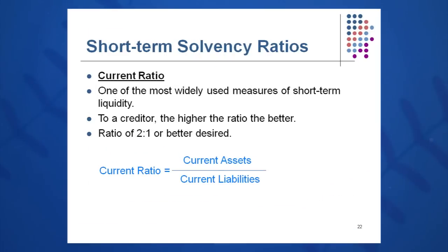Current ratio is very, very important — this is one you must memorize for life. It's current assets divided by current liabilities. Both indicators come off the balance sheet. A ratio of 2 to 1 is desired. Some authors say 1 to 1, but I like 2 to 1 better because it gives us a little bit of a buffer. I'd rather have a little bit more than just enough to pay my bills. So I'm going to recommend a 2 to 1 current ratio, whether that be in your personal life or your business life. 3 to 1 might be even better.